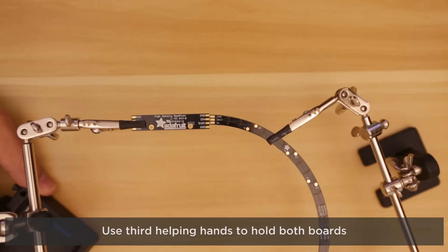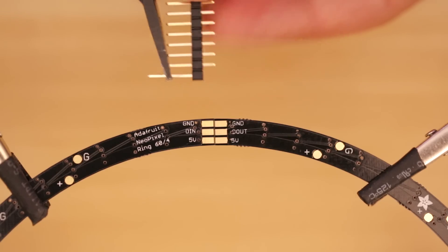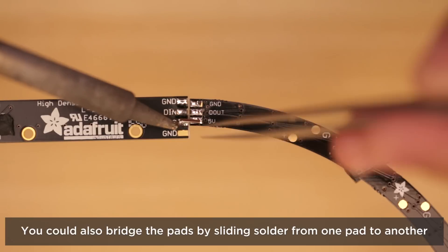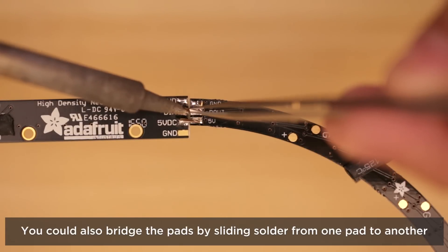Here's how to attach the sticks to the quarter 60 rings. We'll use two sets of third helping hands to keep everything steady while we solder. Header pins will help bridge the connections between the pads. First, we'll need to tin the pads with solder and then slide a piece of header onto the pads.